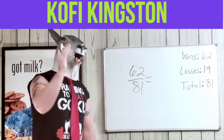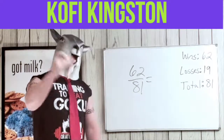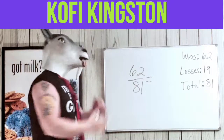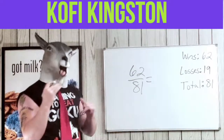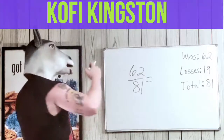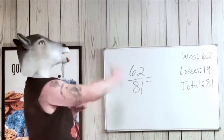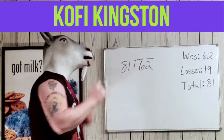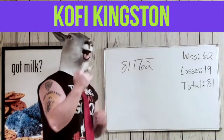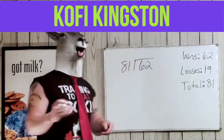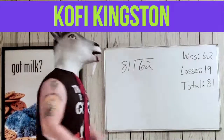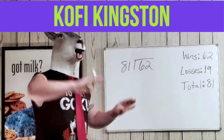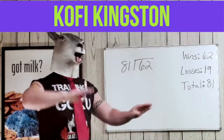Now, when you get from a fraction to a percentage, all you're gonna do is divide. Just like a WWE superstar, you're gonna left hook — pow! — and knock that 62 on out. So we went ahead and turned it into a division problem: 62 divided by 81.